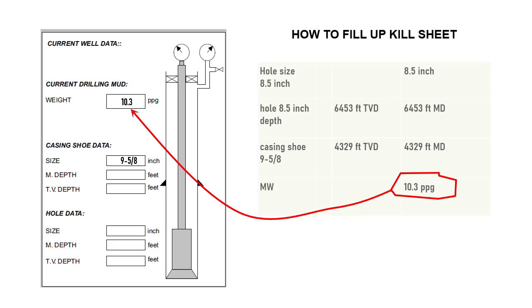Fill the casing size: 9⅝ inches. Shoe depth: 4329 feet MD and TVD. Then hole size: 8.5 inches, and hole depth: 6453 feet MD and TVD.